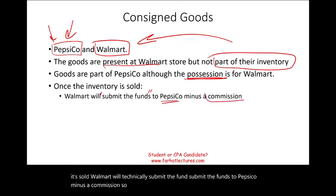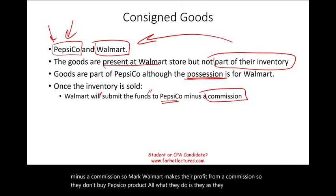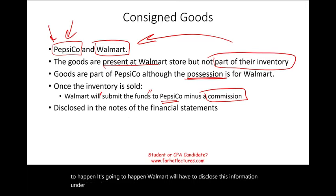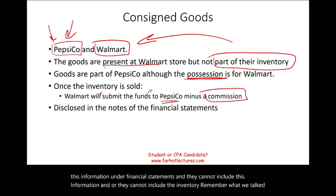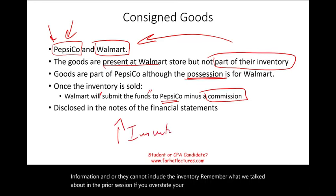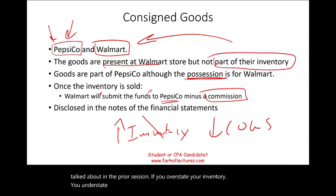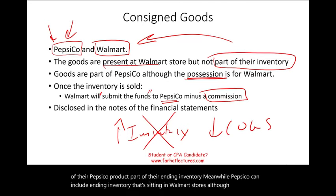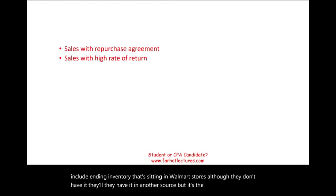Once you pick up a PepsiCo product from Walmart's shelves and go to the register and it's sold, Walmart technically submits the funds to PepsiCo minus a commission. So Walmart makes their profit from a commission — they don't buy the PepsiCo product. Walmart cannot include this inventory in their ending inventory, because if you overstate your inventory, you understate cost of goods sold. Meanwhile, PepsiCo can include that ending inventory sitting in Walmart stores as part of their own inventory.